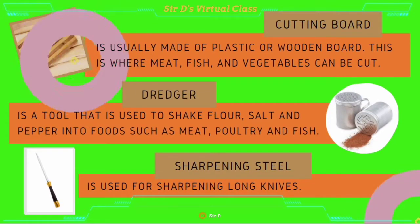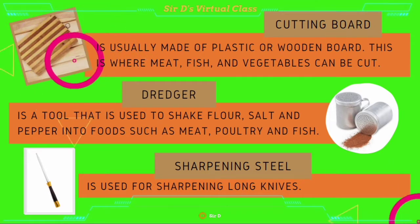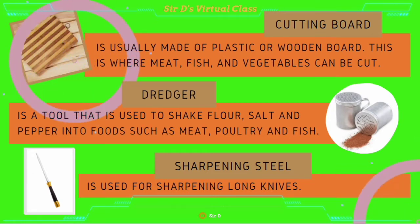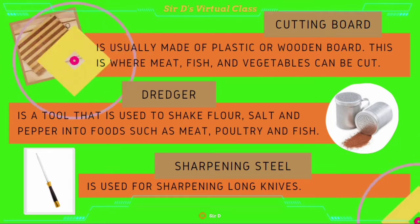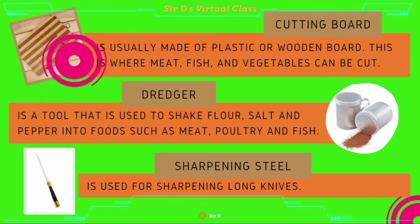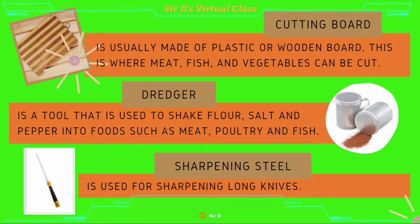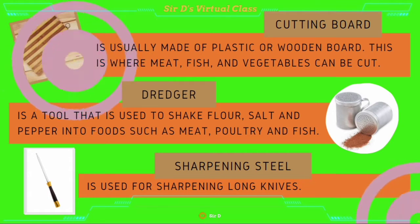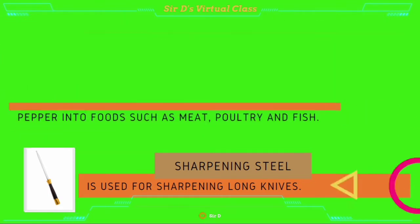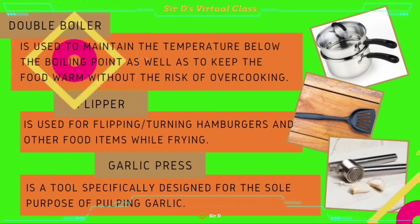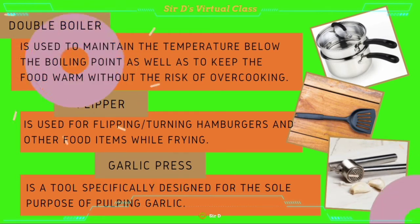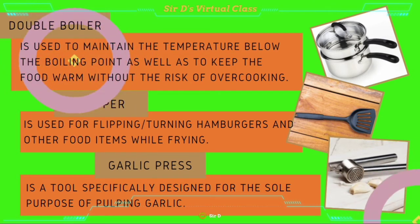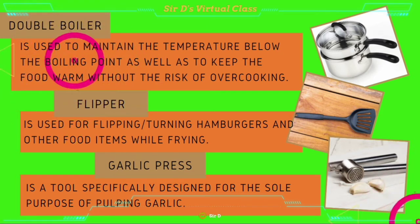Cutting board is usually made of plastic or wooden board. This is where meat, fish, and vegetables can be cut. Dredger is a tube that is used to shake flour, salt, and pepper into foods such as meat, poultry, and fish. Sharpening steel is used for sharpening long knives. Double boiler is used to maintain the temperature below the boiling point, as well as to keep the food warm without the risk of overcooking.